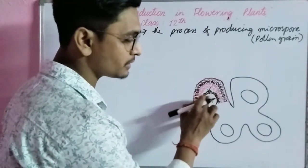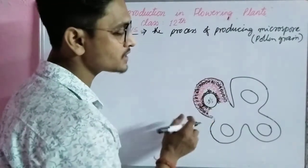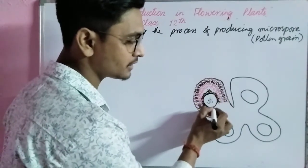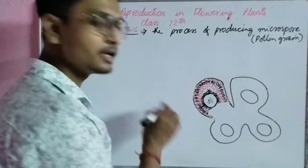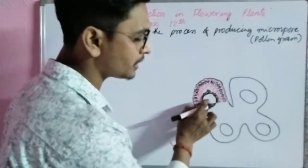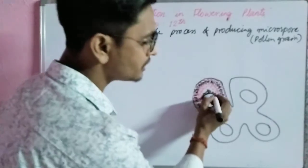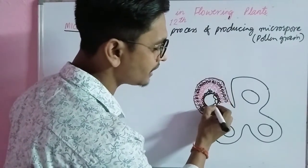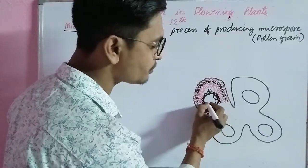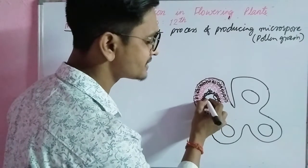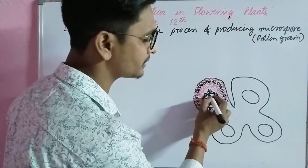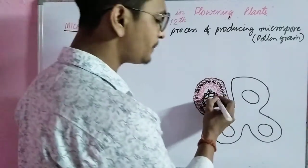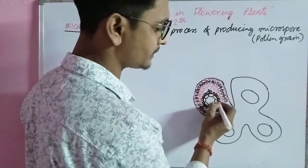First of all, the microsporogenesis process — where do we start from? Here is the pollen sac. Inside the pollen sac, there are a large number of sporogenous cells.